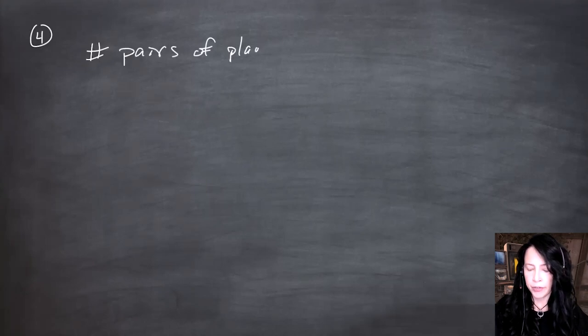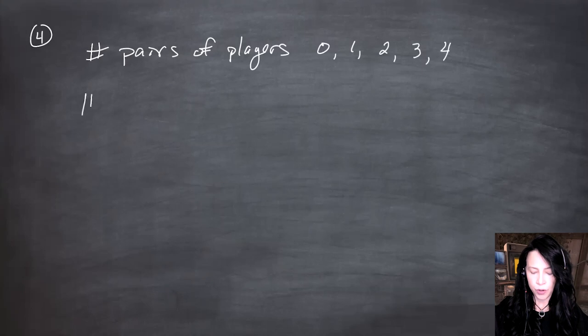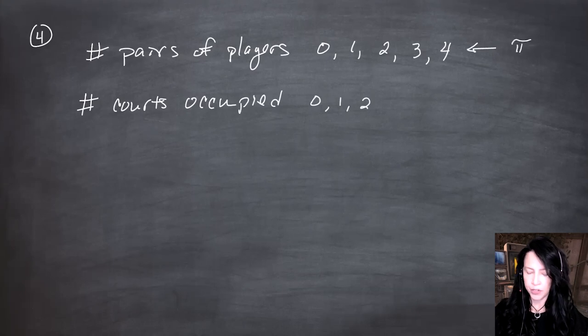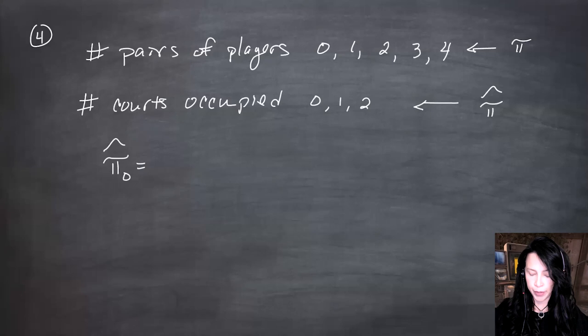In homework problem four, the number of pairs of players in the system can be zero, one, two, three, or four, and the number of courts occupied can be zero, one, or two. If you find the stationary distribution for the number of players — call it pi — and for courts occupied call it pi-hat, then the long-run probability of zero courts occupied equals pi-zero, since that only happens when there are zero pairs of players.